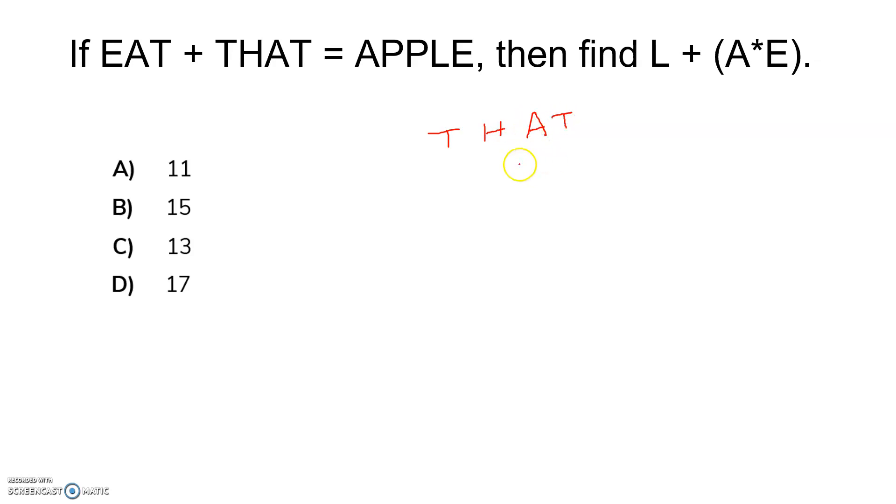So THAT plus EAT, right? So basically E, A, T, if you add this, what we are getting? If we are adding then A, P, P, L, E, right? So now obviously one thing is clear: this is a four digit number and we are getting a five digit number as the answer.